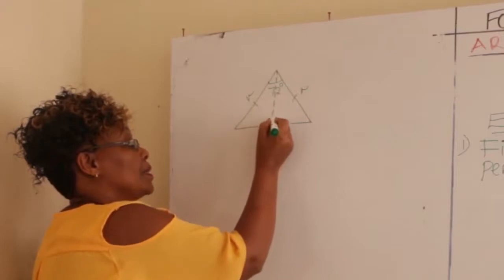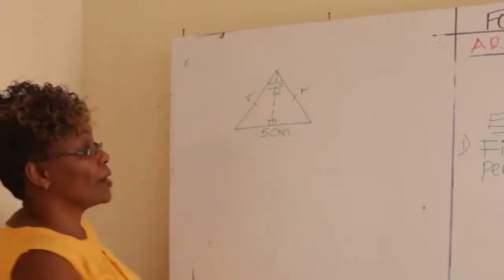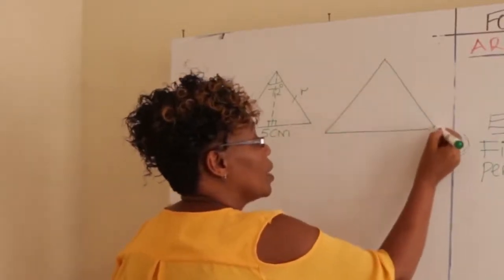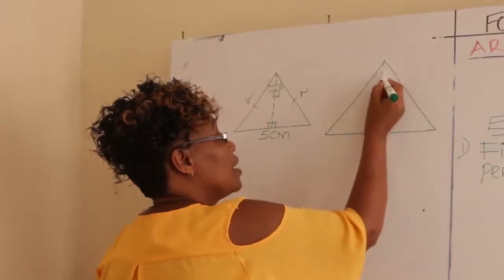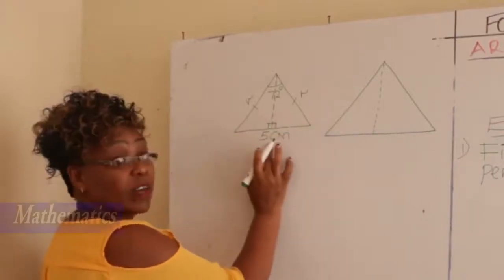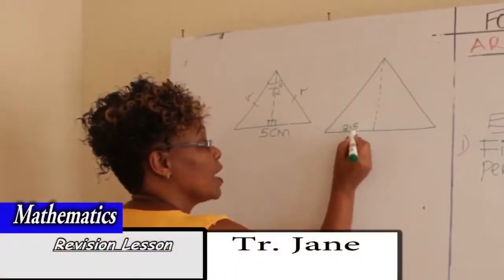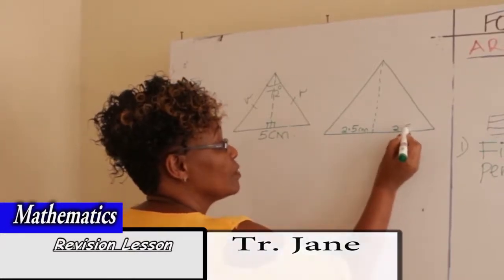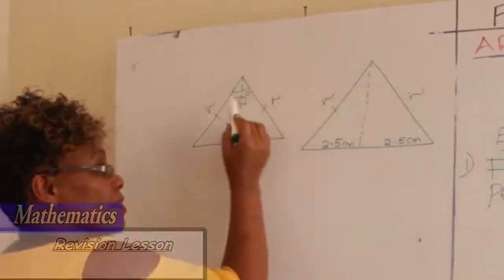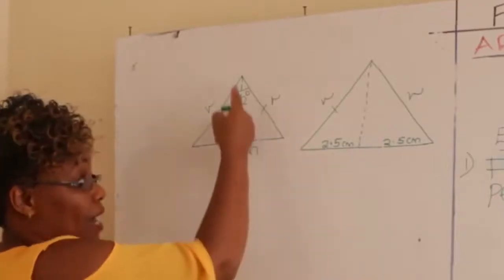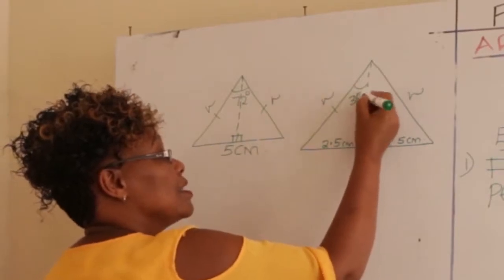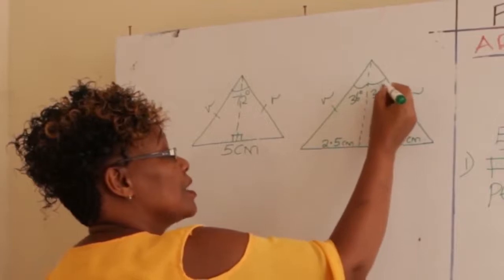Drop a perpendicular so that our triangle is divided at the base. The base of five centimeters is divided into 2.5 centimeters and 2.5 centimeters. This is our radius, and the 72-degree angle is also divided into two equal parts by this perpendicular, giving 36 degrees on each side.